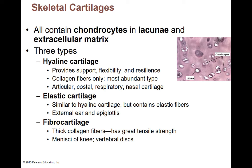All skeletal cartilages contain chondrocytes — 'chondro' means cartilage, 'cyte' means cells — so chondrocytes are cartilage cells. They sit in the lacunae, which are spaces inside the cartilage. Both cartilage and bone have lacunae with cells inside them: cartilage has chondrocytes and bone has osteocytes. They both have spaces with cells inside, surrounded by extracellular matrix. There are three types of cartilage based on the fibers found inside.